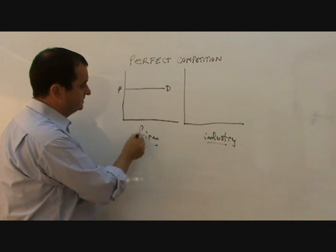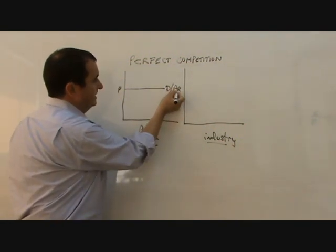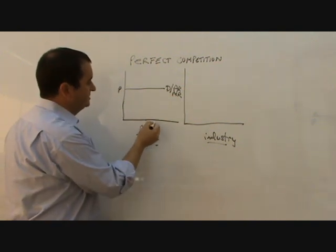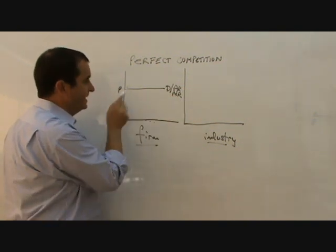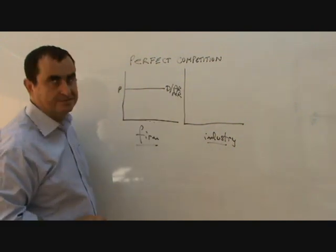This is what the firm sees, the firm. So an elastic demand curve, which is also the AR curve, and it's also the MR curve. Every time they sell another unit, the same amount of revenue, extra revenue, comes in. So the marginal revenue is also horizontal on top of the AR curve.